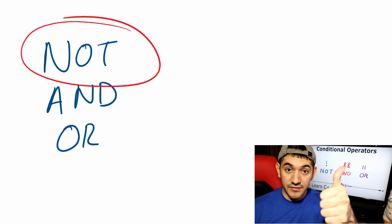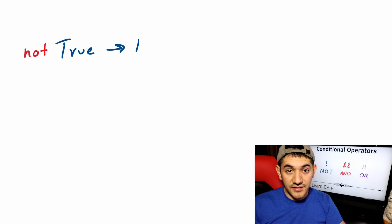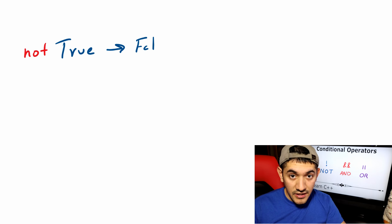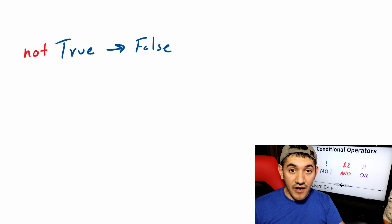Let's talk about not. The not operator is actually quite easy — all it does is it flips the result of a condition. So if a condition came out to be true and you not it, you basically make it false. And if a condition came out false and you not it, then you make it true. For example, I could either ask the question: is it cold?